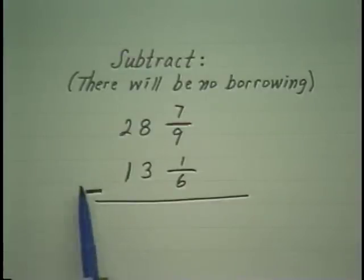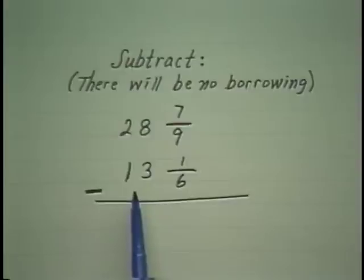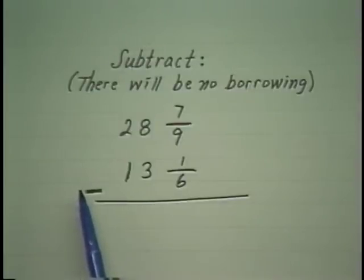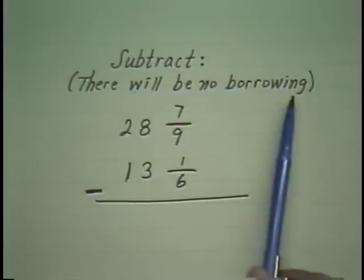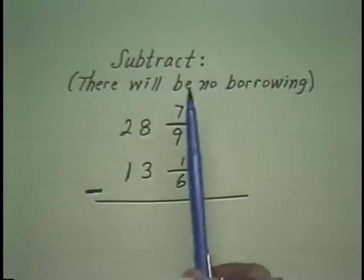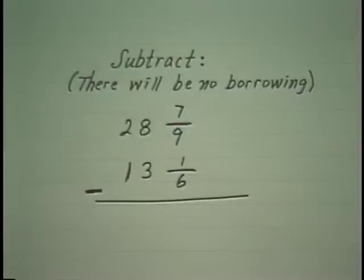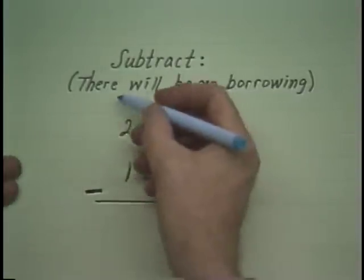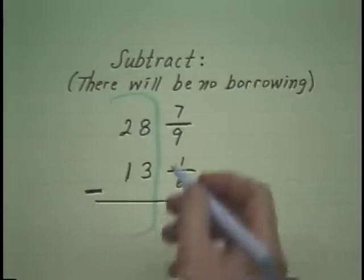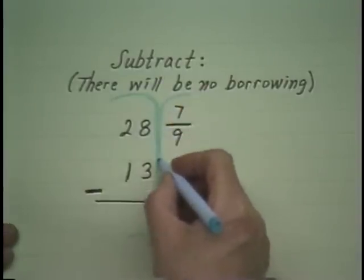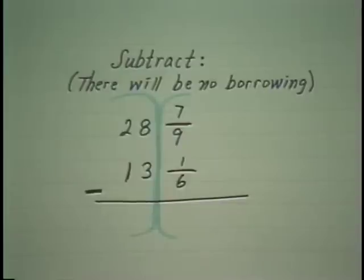Essentially, the main difference between adding and subtracting mixed numbers is that in subtraction you sometimes need to borrow. Let's take a case where there is no borrowing, just to emphasize that it's the same as addition. Remember in addition we said that essentially you have two problems: a whole number problem and a fraction problem.